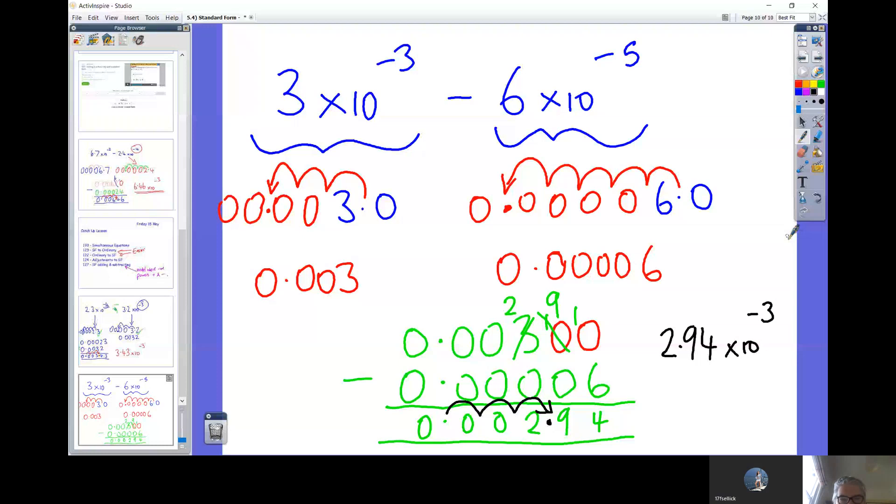So 3 times 10 to the minus 3, once it's converted to a normal number, is 0.003. And similarly, 6 times 10 to the minus 5, pop the zeros down, pop five places, you get 0.00006. Hopefully you're okay with that.